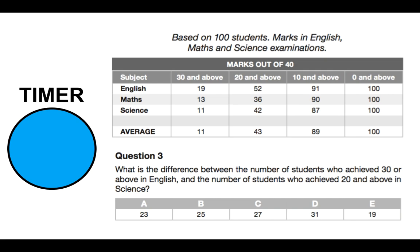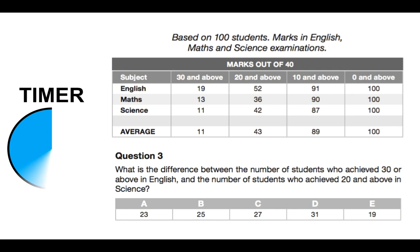Question number three — same chart. What is the difference between the number of students who achieved 30 or above in English and the number of students who achieved 20 and above in science? You'll need to look at two rows. You've got 20 seconds. Is it A 23, B 25, C 27, D 31, or E 19? Please put your answer to question three in the comments section below.